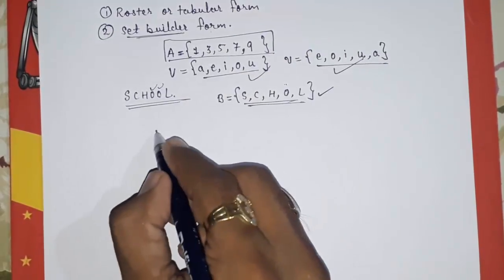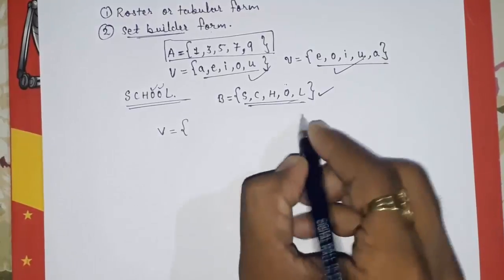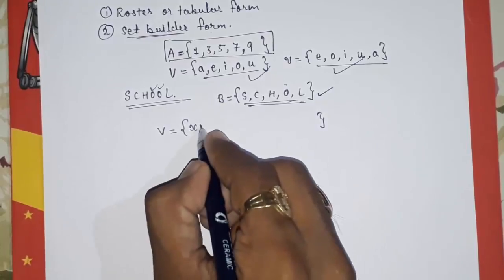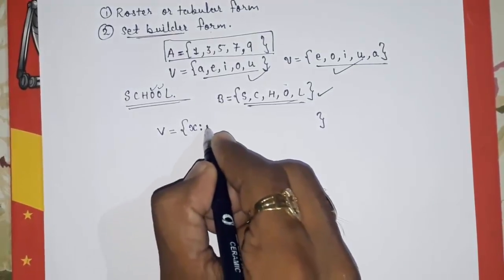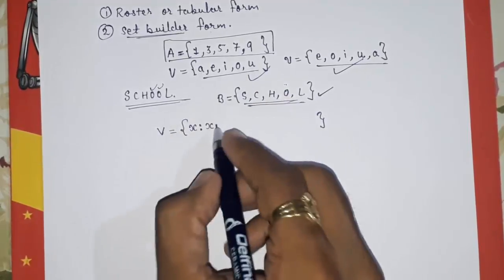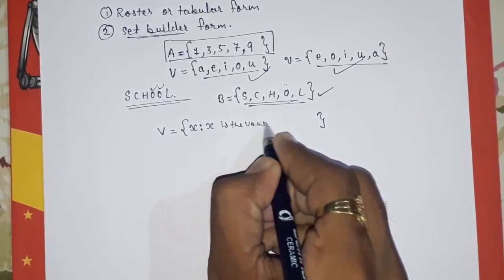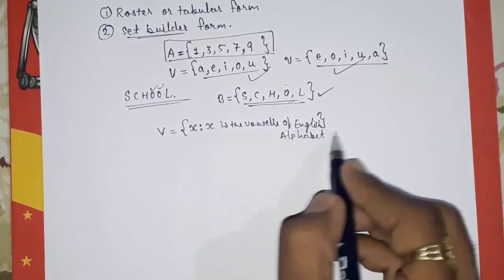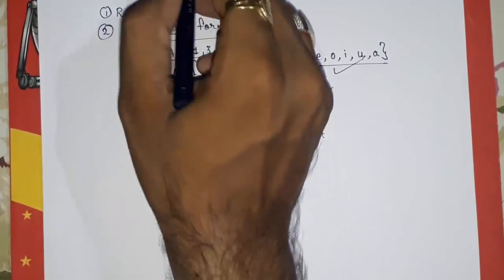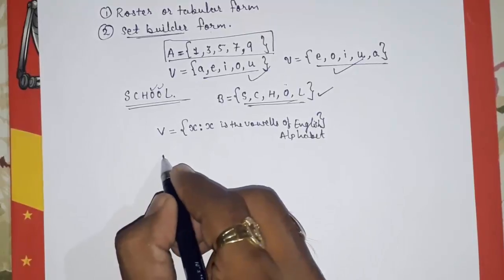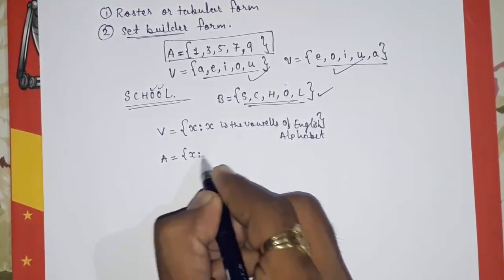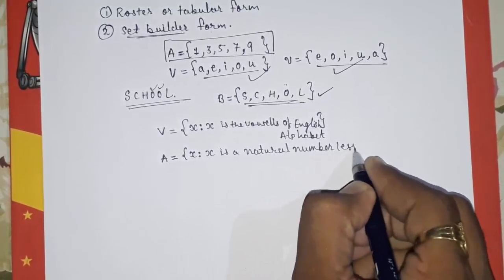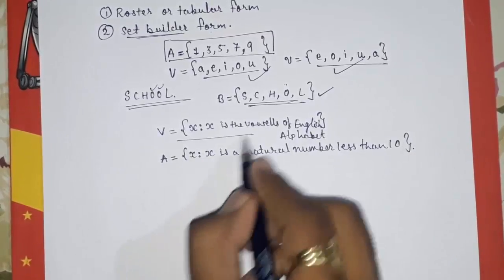In Set Builder form, give a name to the set, start with curly braces, then take a variable like x, followed by a colon — meaning 'such that' — then describe the property. For vowels: V = {x : x is a vowel of the English alphabet}. For natural numbers less than 10: A = {x : x is a natural number less than 10}.